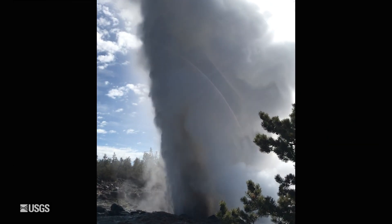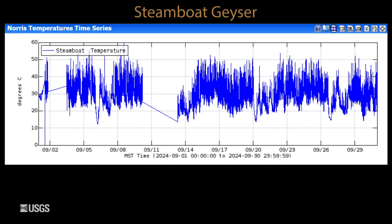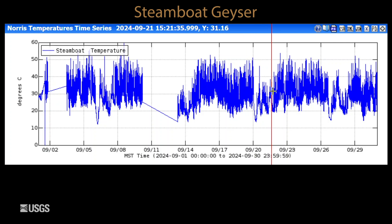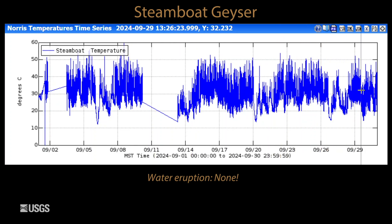Finally, looking at Steamboat Geyser — the tallest geyser in the world. This is the temperature measured in the geyser's outflow channel. There were a couple of periods where the logger was not working properly, so we don't have data there. But overall during the month of September there was a lot of up and down motion caused by minor activity of the geyser. We see a lot of minor activity before there's typically a major eruption, so it looks like with minor activity throughout the entire month of September, there really ought to be a major eruption just around the corner in October.